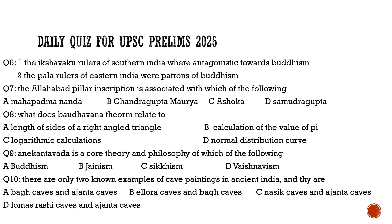Question seven: The Allahabad inscription is associated with which of the following? Is it Mahapadmananda, Chandragupta Maurya, Ashoka, or Samudragupta? It is not any of the first three — the Allahabad Pillar Inscription is associated with Samudragupta. That is the correct answer for question seven.